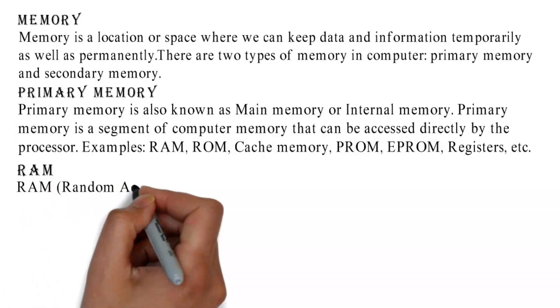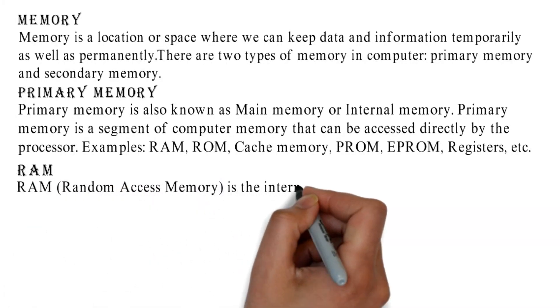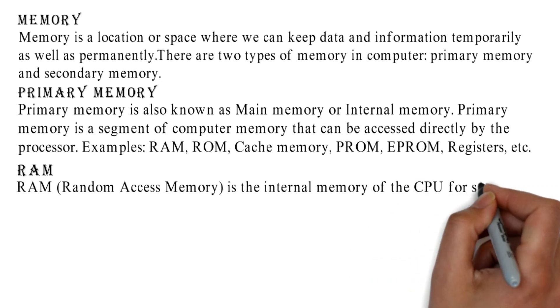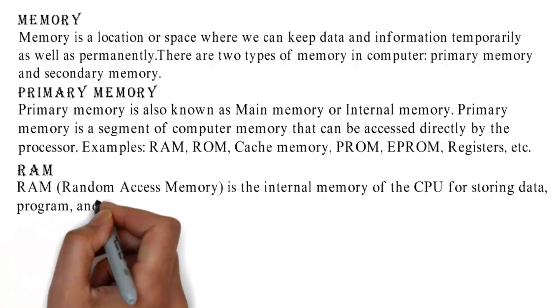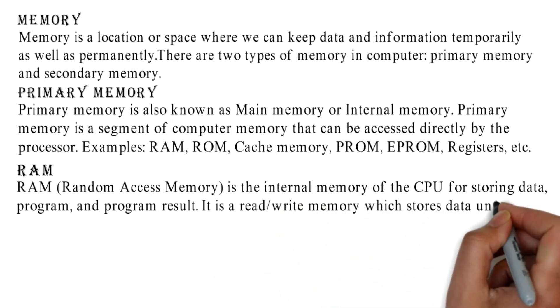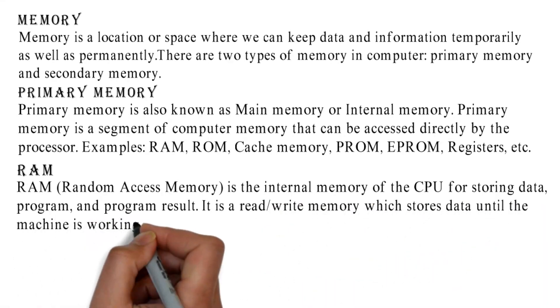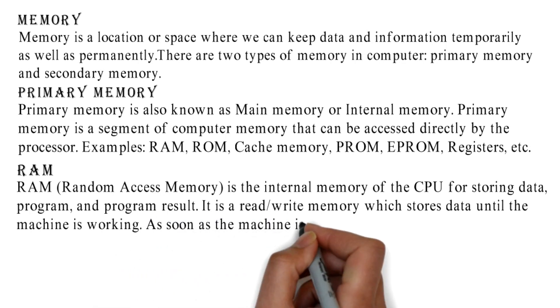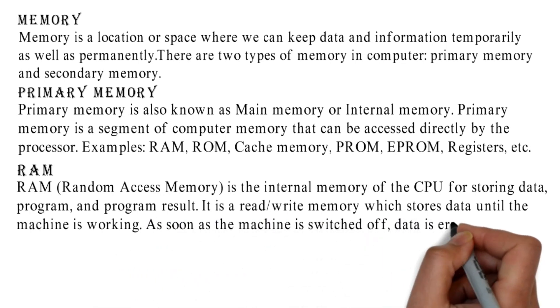RAM, random access memory, is the internal memory of the CPU for storing data, program, and program result. It is a read/write memory which stores data until the machine is working. As soon as the machine is switched off, data is erased.